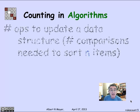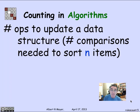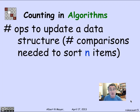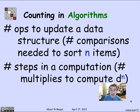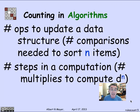Concretely in computer science, counting comes up in algorithms. A central question is often how many operations does it take to do a manipulation on a data structure. For example, how many comparisons does it take to sort n numerical items? There's typically the count of n log n, proven as both achievable and a lower bound. Another example we've seen with fast exponentiation: if you're computing the nth power of a number d, how many multiplications does it take? It's roughly log n using the iterated squaring method.